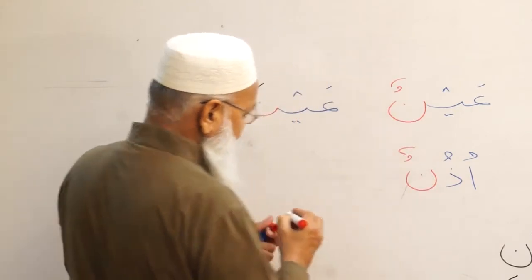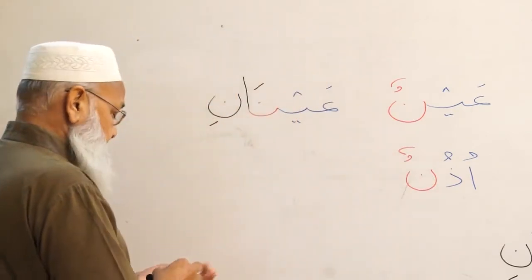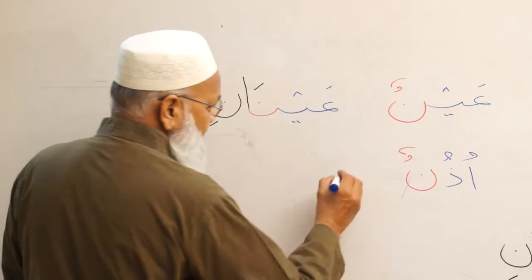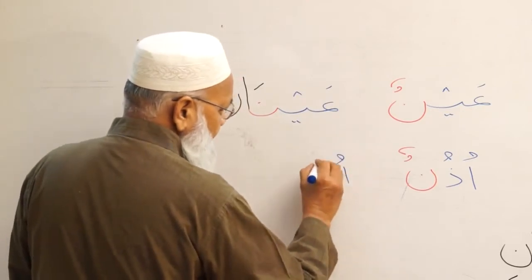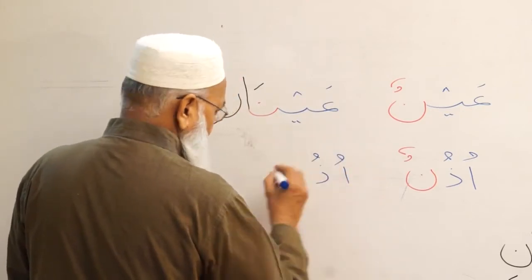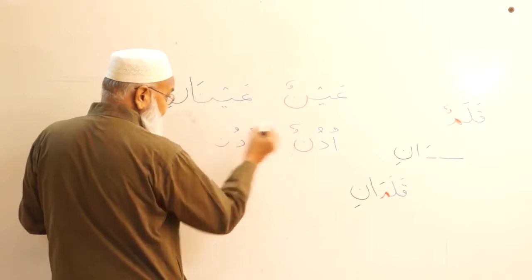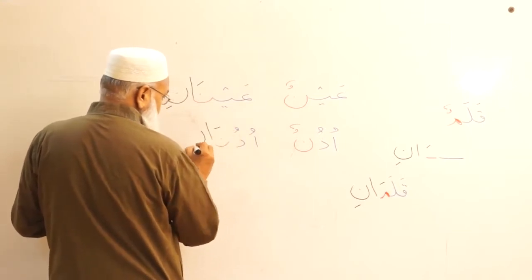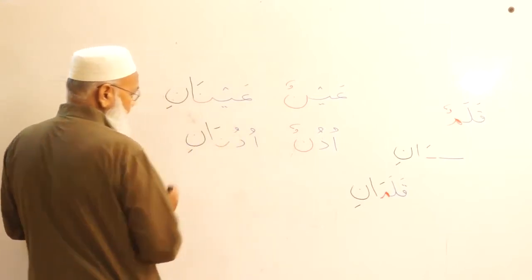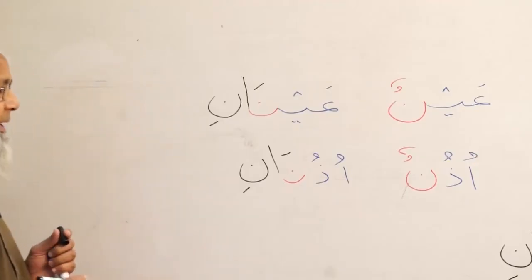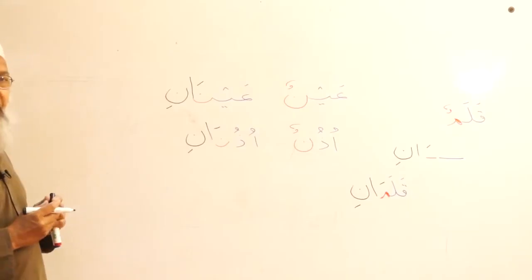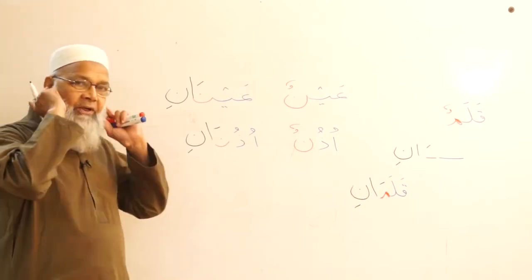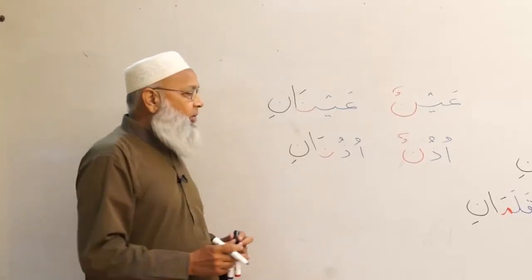Then udhun — an ear in the rafa form. Its musanna would be udhanani — two ears in the rafa form.